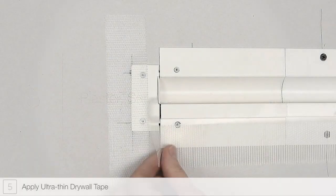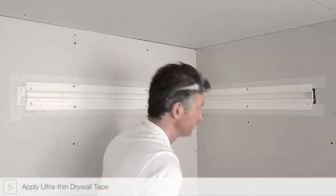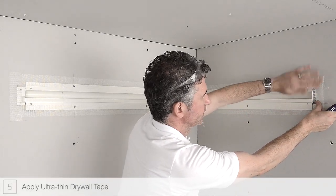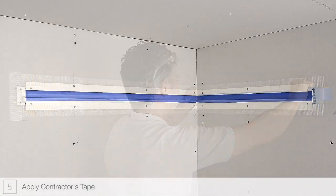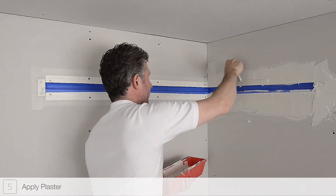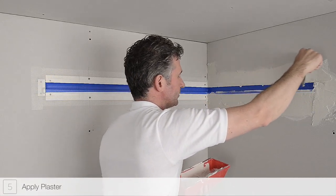Step 5: Apply ultra-thin drywall tape to the reveal channel. Do not overlap sections of the drywall tape. Mask the interior of the channel using contractor's tape. This will help prevent dust or debris from entering the channel.